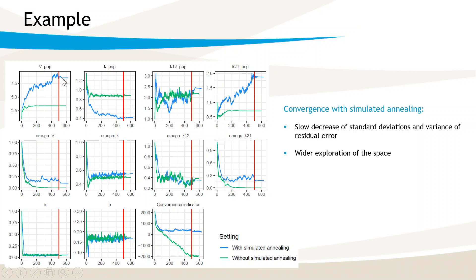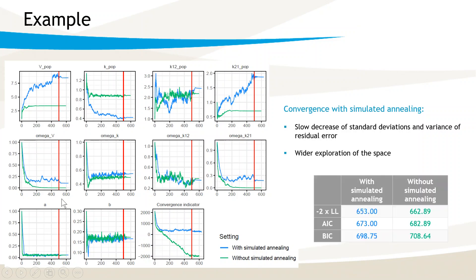For example, VPOP converges to 8 with simulated annealing, but without it, it stays stuck in a local maximum around 3, because omegaV is quickly so small that VPOP cannot move anymore. The solution found with simulated annealing is then different than the one without simulated annealing, and for this project it corresponds to a higher likelihood, so the solution is closer to the global maximum.